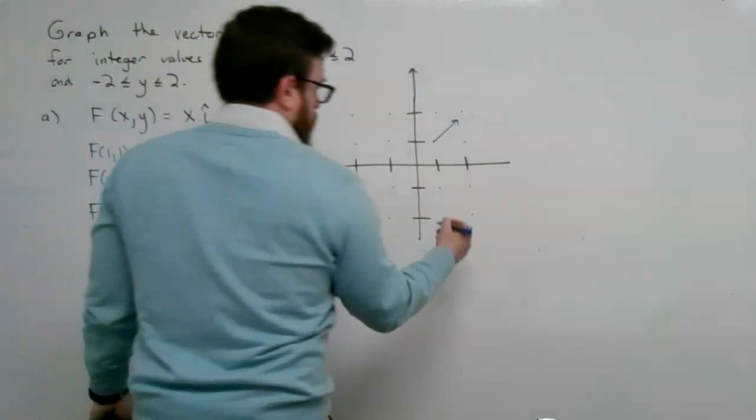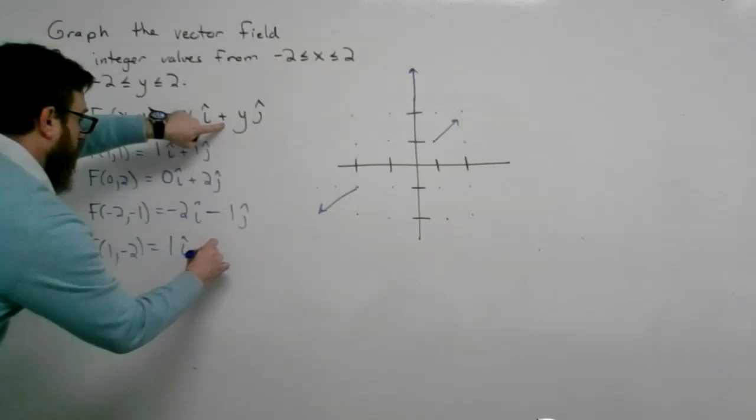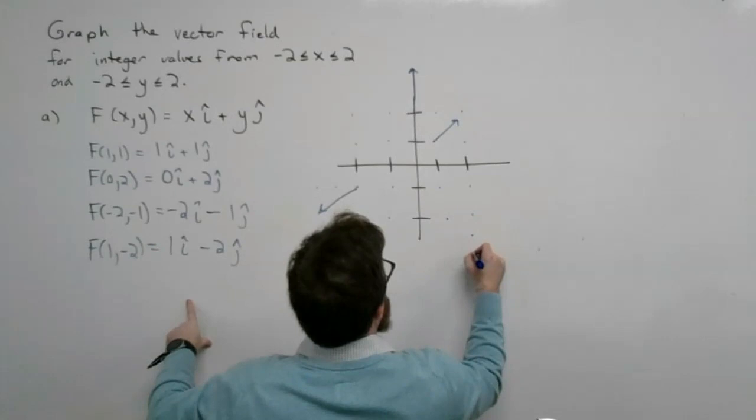Let's do one more. At the point (1, -2), x is 1 and y is -2, so we get 1i - 2j — that's 1 in the x direction and -2 in the y direction.